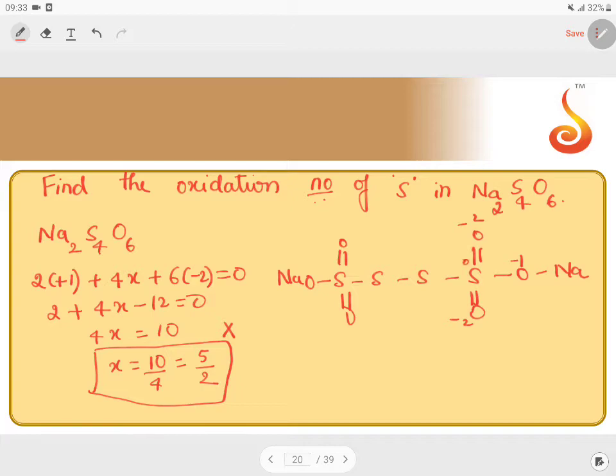Zero and zero here between these two - zero, zero between these two, zero. Again this is -1, -1, and this will be -2 and -2. Now assign the oxidation state for sulfur.